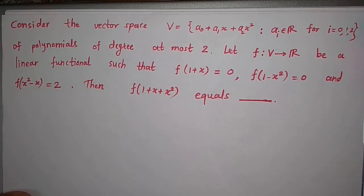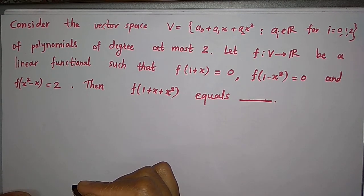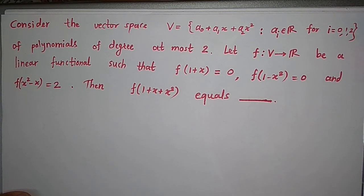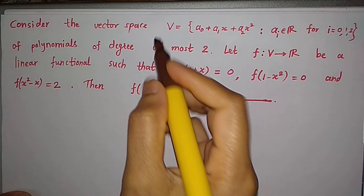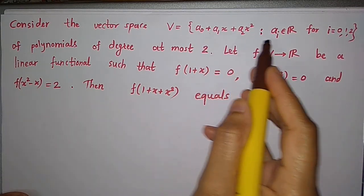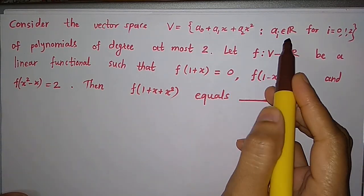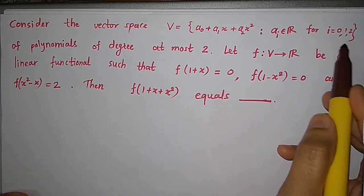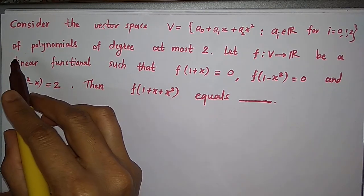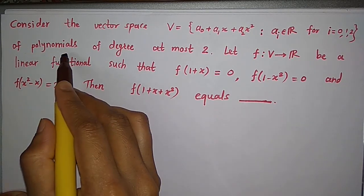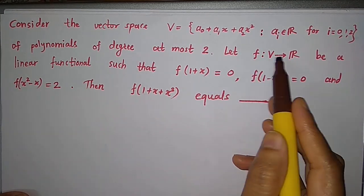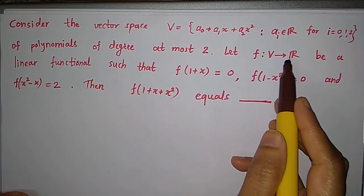In this video I am going to solve a question from GATE 2017. We are given a vector space V which is equal to a₀ + a₁x + a₂x² where aᵢ are real numbers for i = 0, 1, 2, which is a vector space of polynomials of degree at most two.